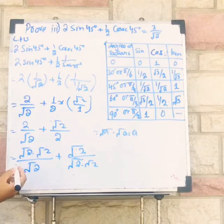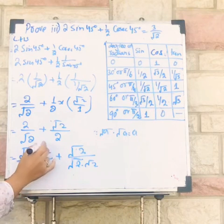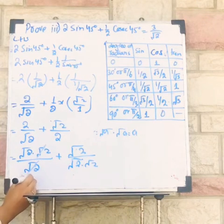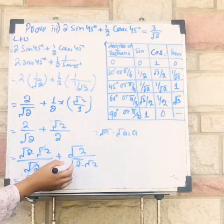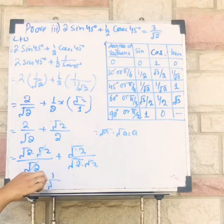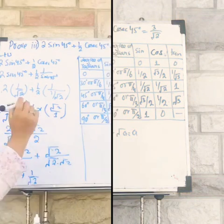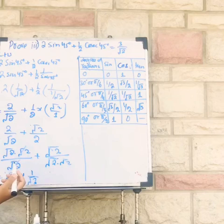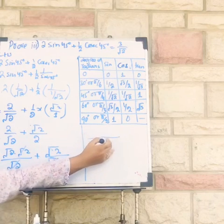And here I can easily cancel this from under root of 2 plus 1 divided by under root of 2. Guys, now I have to take LCM which is under root of 2.